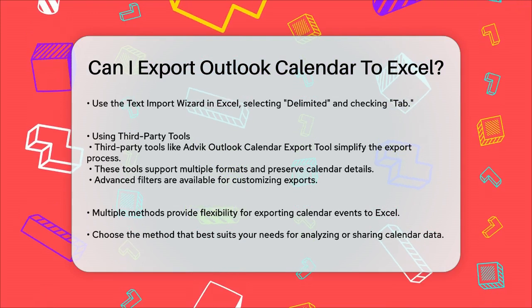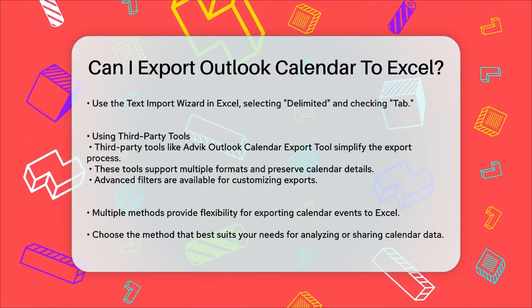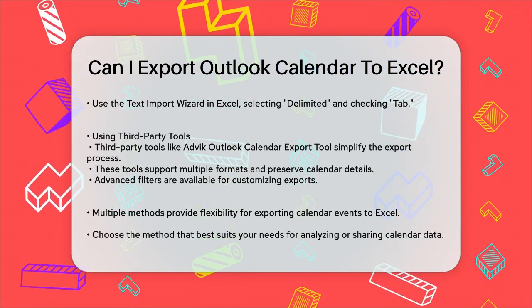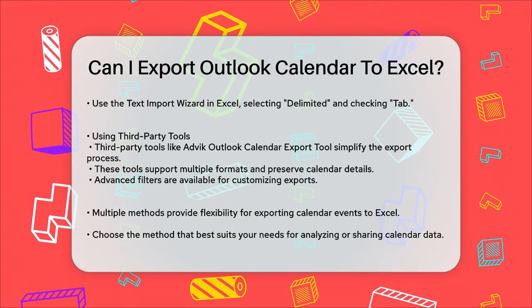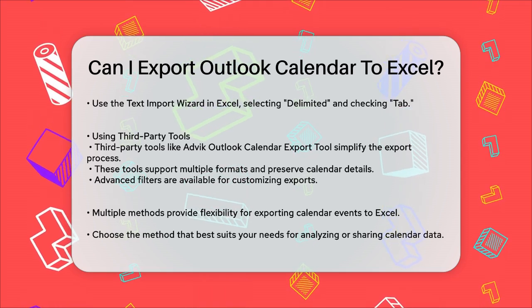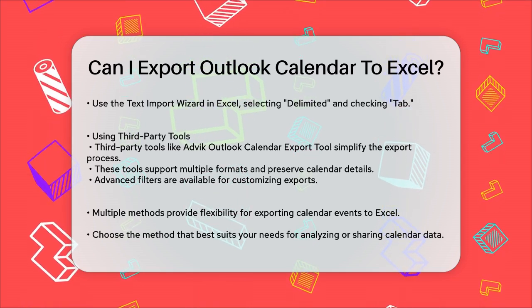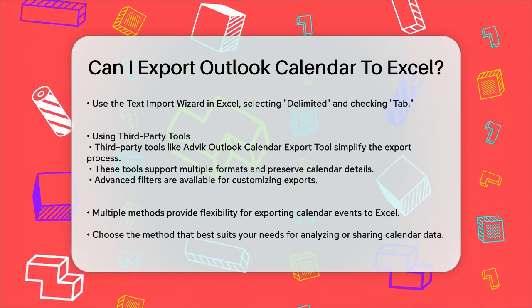You'll go through the text import wizard, selecting the Delimited option and checking the tab box under Delimiters. Click Finish to display your Google Calendar events in the spreadsheet.